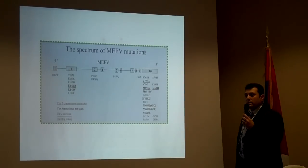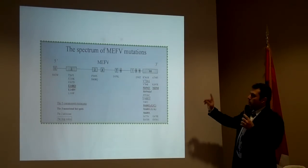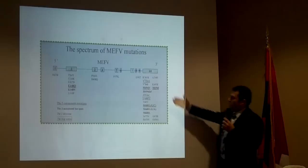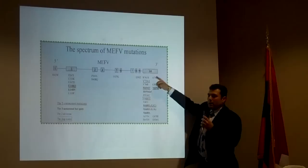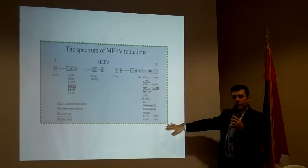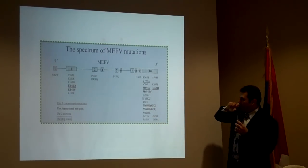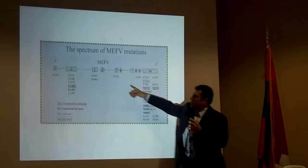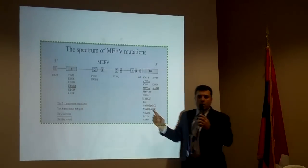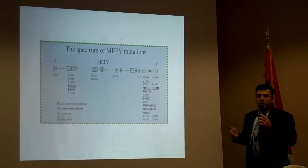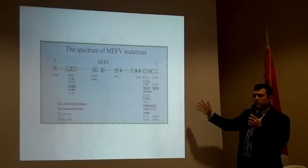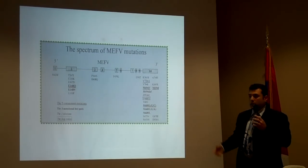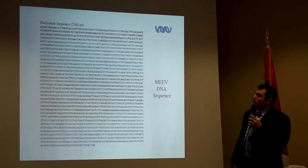This diagram from Isabel, a French scientist, shows all the mutations that can cause the condition. Exon 10 has a lot of mutations for some reason; exon 2 has 2-3. Even if an exon has only one mutation, it still matters — pretty much all these mutations can cause the condition.